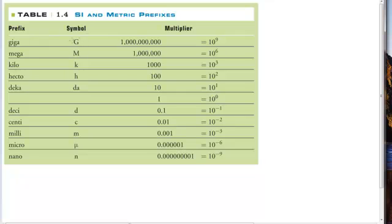We see GIGA, which is symbolized with a capital G. The difference between capitals and lower cases matters. MEGA, symbolized with a capital M. KILO, with a lower case K. HECTO, DECA, DECI, CENTI, MILLI, MICRO, NANO, and so on.